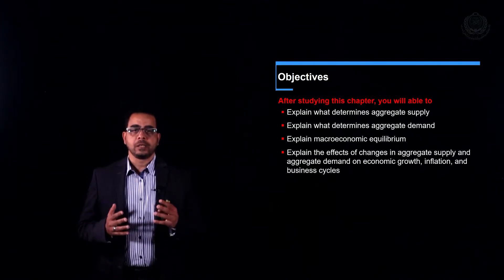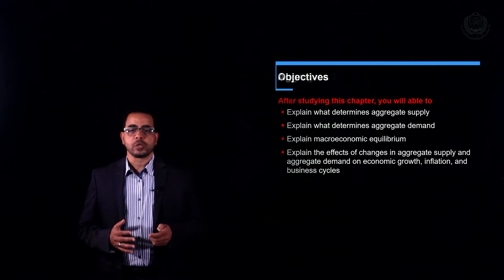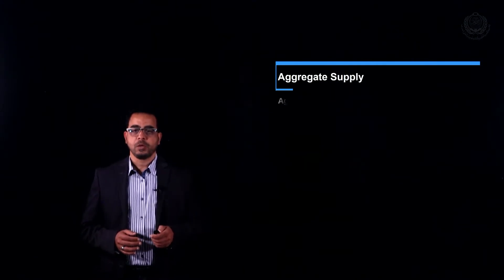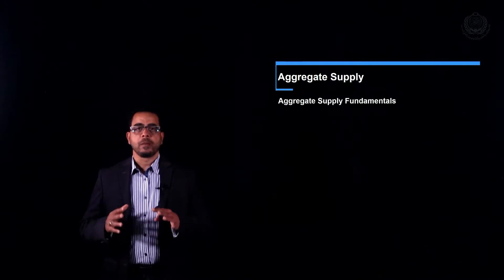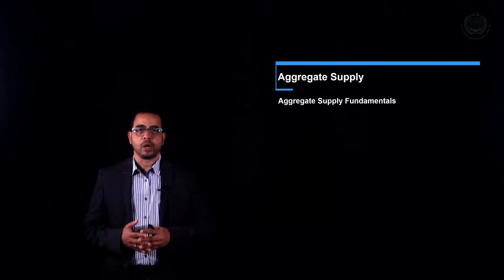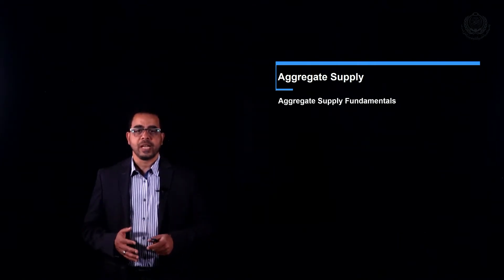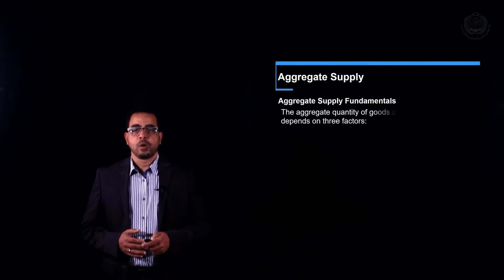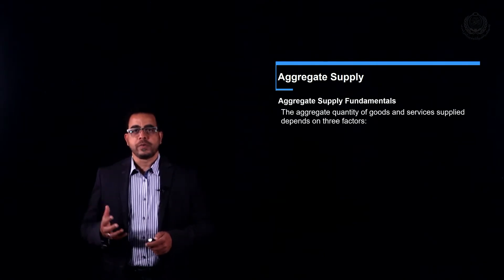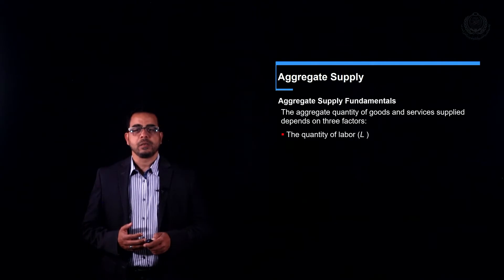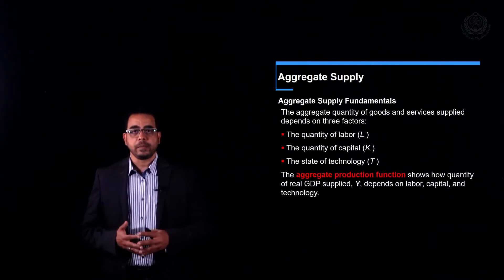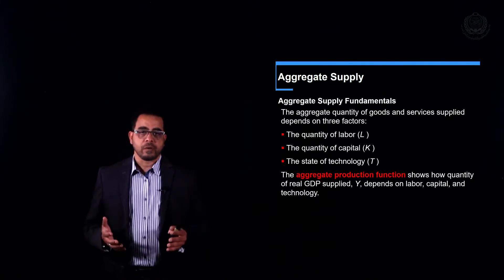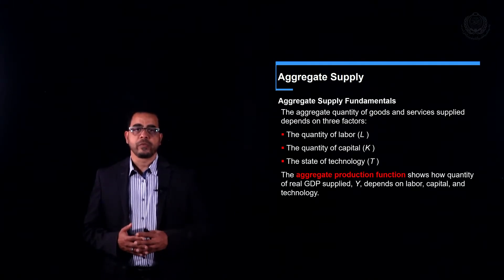Let's talk about the aggregate production function. When we talk about aggregate supply, we are talking about the supply of GDP — the supply of all goods and services in the country. That supply is actually a function of three variables: the size of labor, the size of capital, and the state of technology.